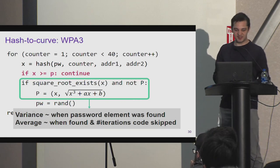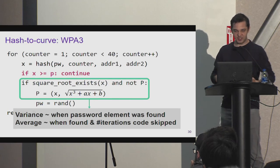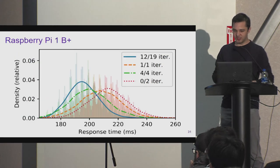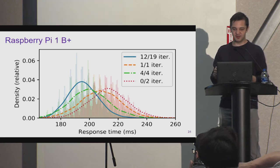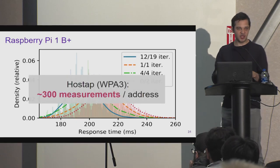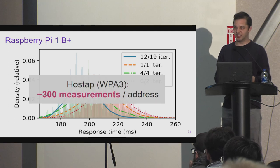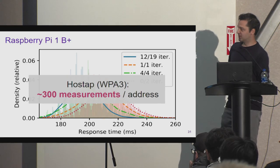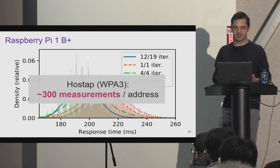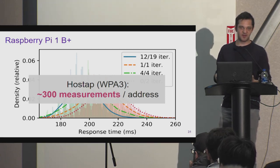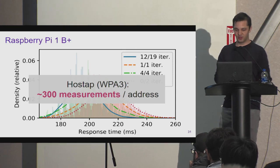Are these timing differences measurable in practice? Yes, though they are smaller than in the modP case — requiring about 300 measurements per MAC address to gain useful information. The resulting timing measurements form a signature of the password that can again be used in offline dictionary or brute-force attacks.